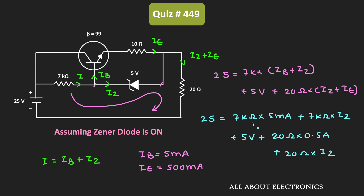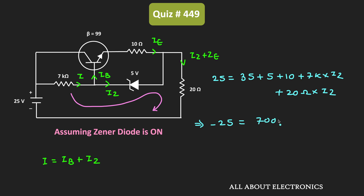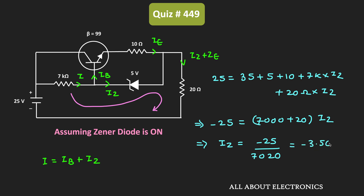Simplifying: 7kΩ × 5mA = 35V, and 20Ω × 0.5A = 10V. So: 25 = 35 + 5 + 10 + 7kΩ × IZ + 20Ω × IZ, which gives: 25 = 50 + 7020 × IZ. Therefore: −25 = 7020 × IZ, giving IZ = −25 / 7020 = −3.56mA.